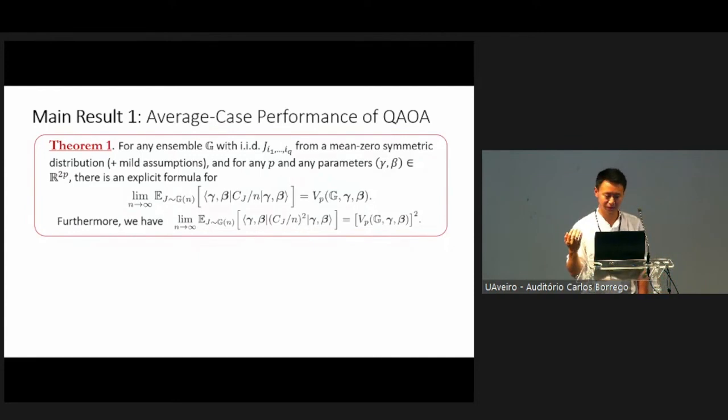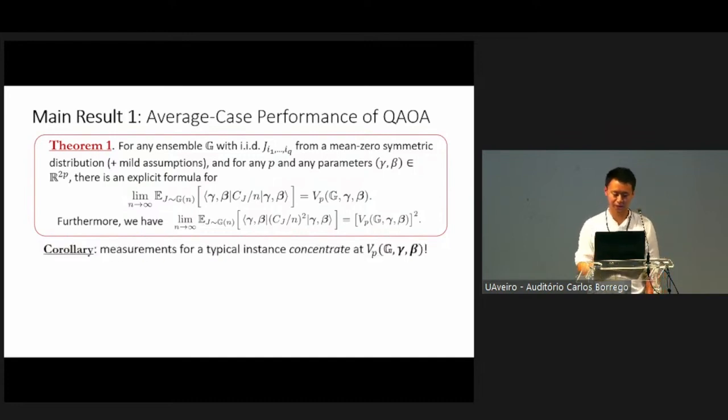Our first main result is that we are actually able to give a rigorous formula for the average case performance of the QAOA on these problems. In fact, we actually consider more general ensembles. For any ensemble where you have the coupling j drawn from some mean zero symmetric distribution, and there's also some mild assumptions, then if you give me any fixed level p and any set of parameters gamma and beta, there's an explicit formula that tells you what the expected energy of the output of the QAOA is with respect to this ensemble of COPs.